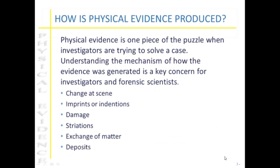So exactly how is physical evidence produced? There are several different mechanisms that can bring about physical evidence at crime scenes. It can either be through a change at a scene, impressions, indentions and prints at a scene, damage, striations, through the exchange of matter, or through deposits being made.